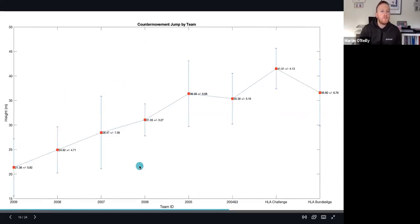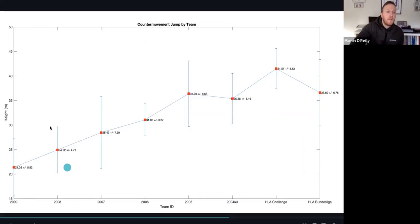Looking at counter movement jump height across the players, the youngest players born in 2009 had an average jump height of 21.36 plus or minus a standard deviation of 5.2 centimeters. The best team was actually the HLA challenge team who had an average score of 41.51 centimeters plus or minus 4.13.